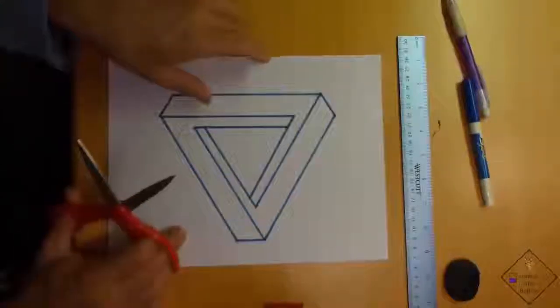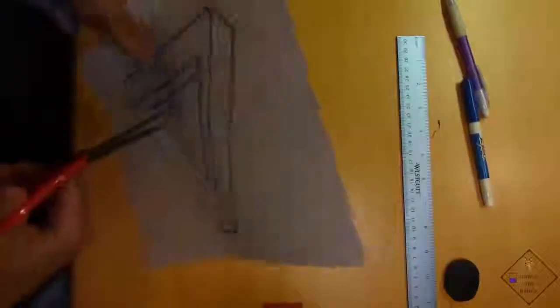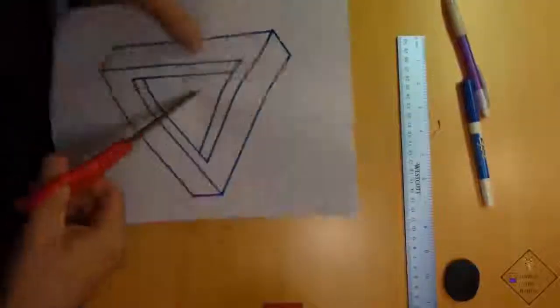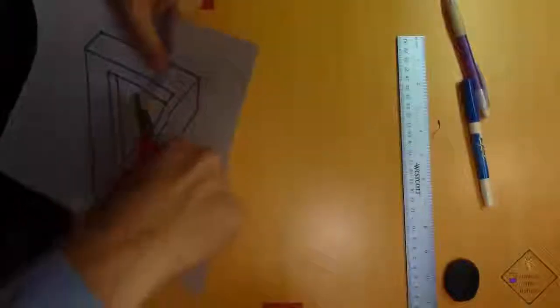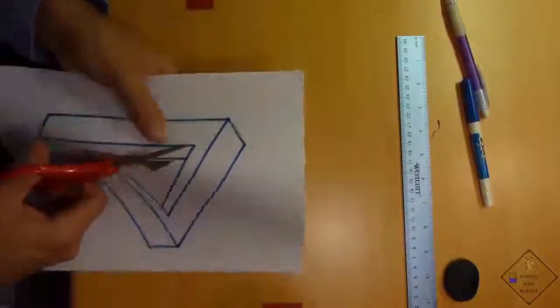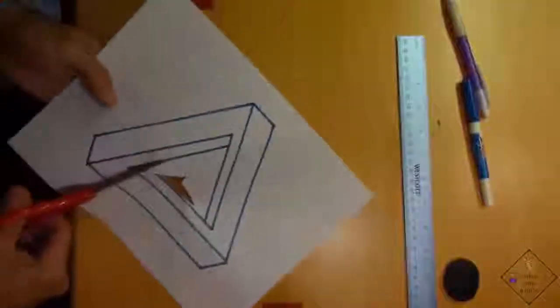He is now going to use scissors to cut out the center triangle and the outside border to create his Verastro impossible triangle.